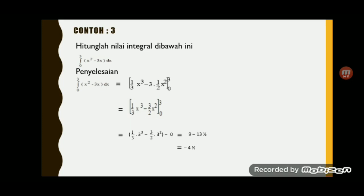Selanjutnya nilai x diganti 3, berarti 1 per 3 kali 3 pangkat 3, dikurangi 3 per 2 kali 3 pangkat 2. Karena x diganti 0, maka hasilnya dikurangi 0. Untuk bagian pertama, 3 pangkat 3 adalah 27 dibagi 3 sama dengan 9. Bagian kedua, 3 pangkat 2 adalah 9, dikali 3 sama dengan 27, dibagi 2 sama dengan 13,5. Sehingga 9 dikurangi 13,5 sama dengan negatif 4,5.